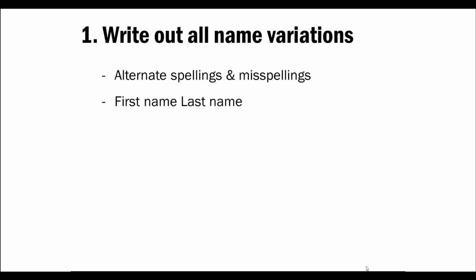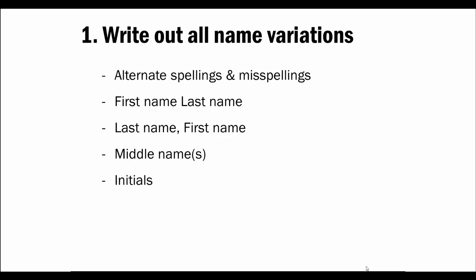Include first name last name, and last name first name. Did your person have any middle names? Include versions with and without the middle name. Include initials — could your person have used their middle name as an initial, or could they have used initials in place of their first name? Include maiden names or any other name changes your person might have had.